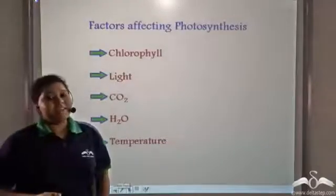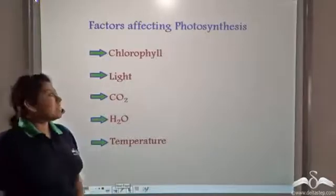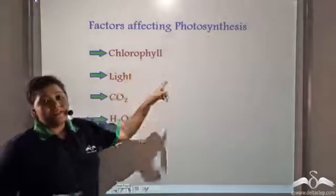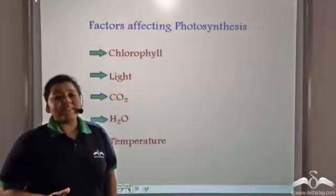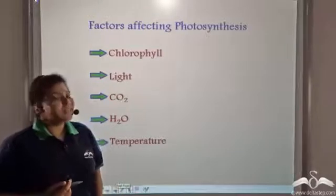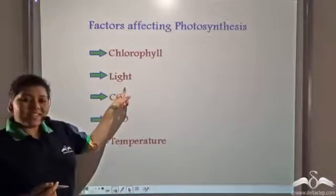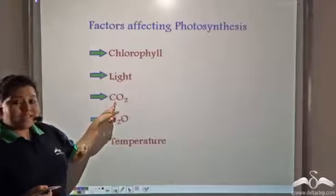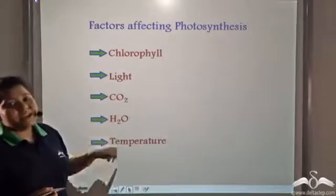The different factors affecting photosynthesis are chlorophyll, which is a green pigment present in the walls of chloroplast, light, carbon dioxide, water and temperature.